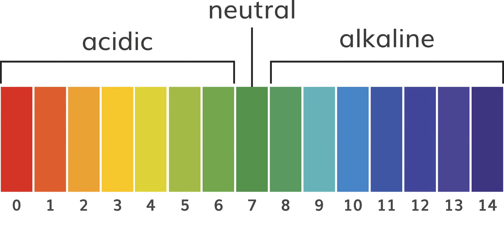Alkaline water is simply water, H2O, that contains alkaline minerals. While regular tap water has a pH that is around 7.5, alkaline water usually has a pH of 8 or 9. On its own, pure water is completely neutral. It is the minerals present, such as sodium, calcium, magnesium, and others, that can alter its pH.